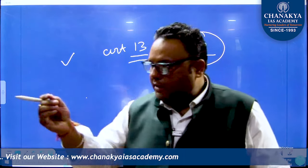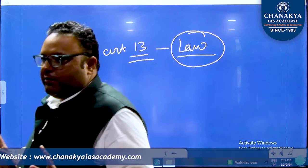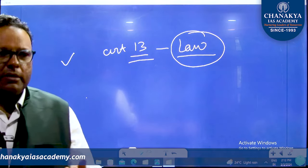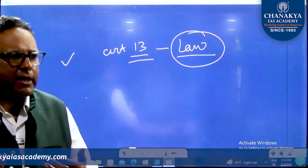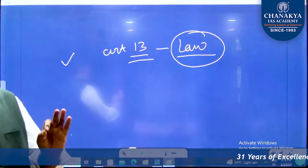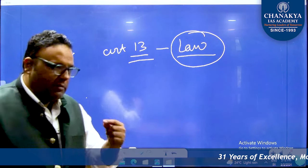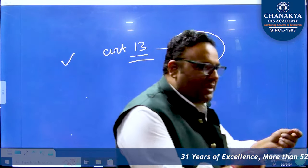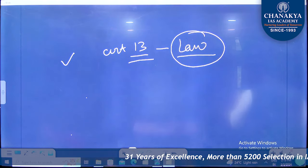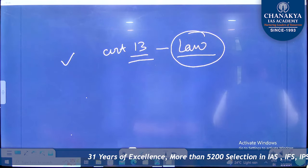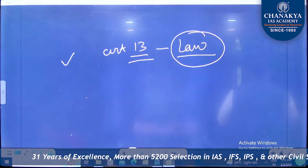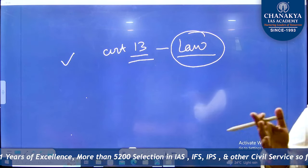Article 13 unme se ek hai jisse hume judicial review ke baare mein pata chalta hai - ki kaun isko unconstitutional, kaun isko null and void thehraega - vo judicial. Ab jo problem hamare saamne aani shuru hui, usko bahut dhyan se samajhna. Ye ek typical topic rehta hai - kaise amendability of the fundamental rights ka development hua aur phir basic structure ka doctrine kaise aaya.